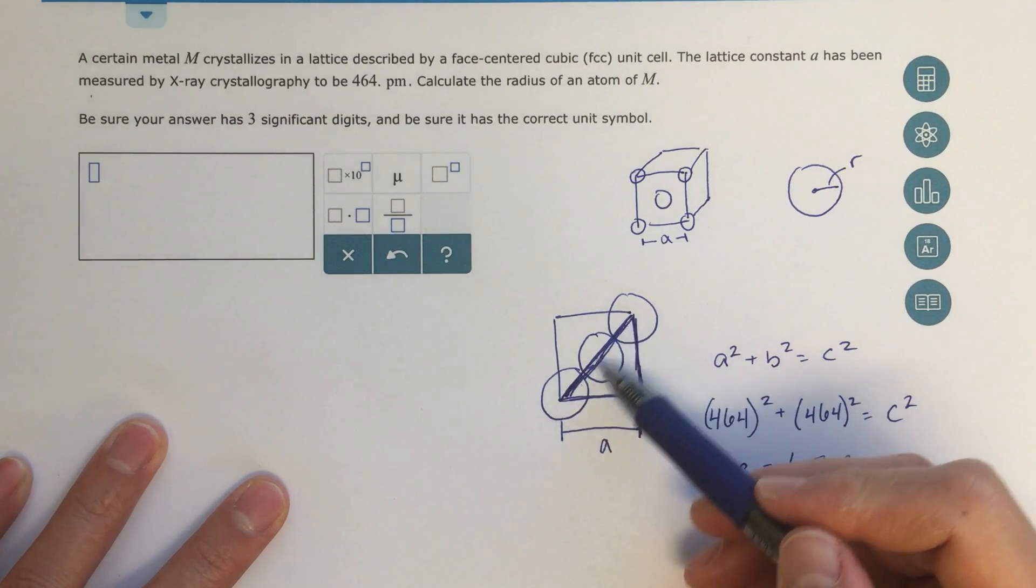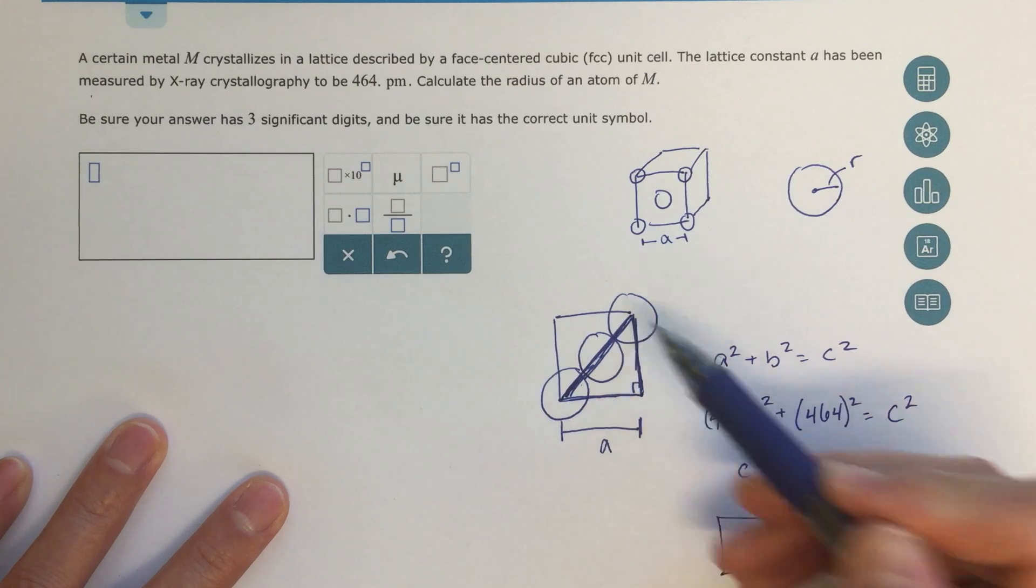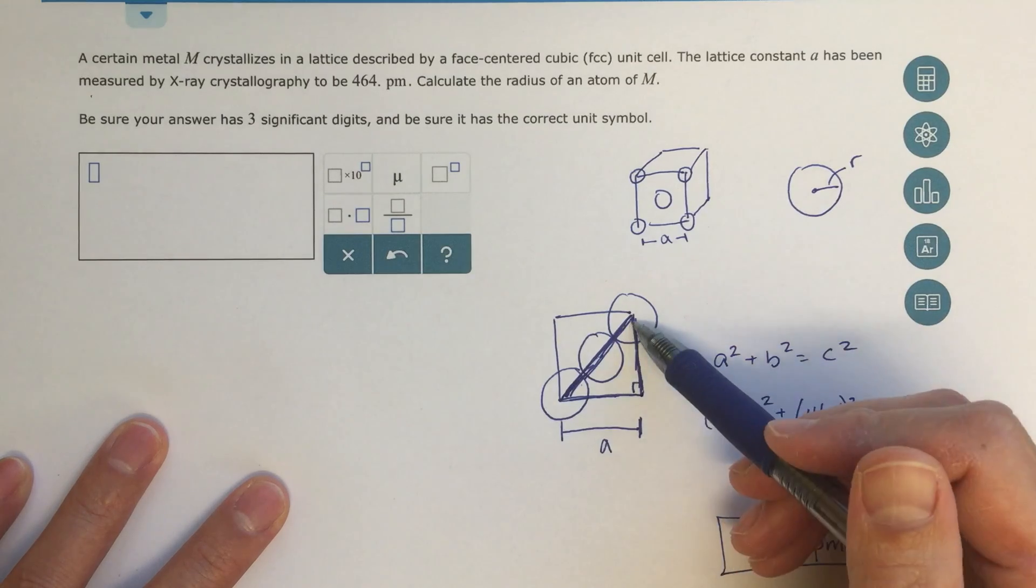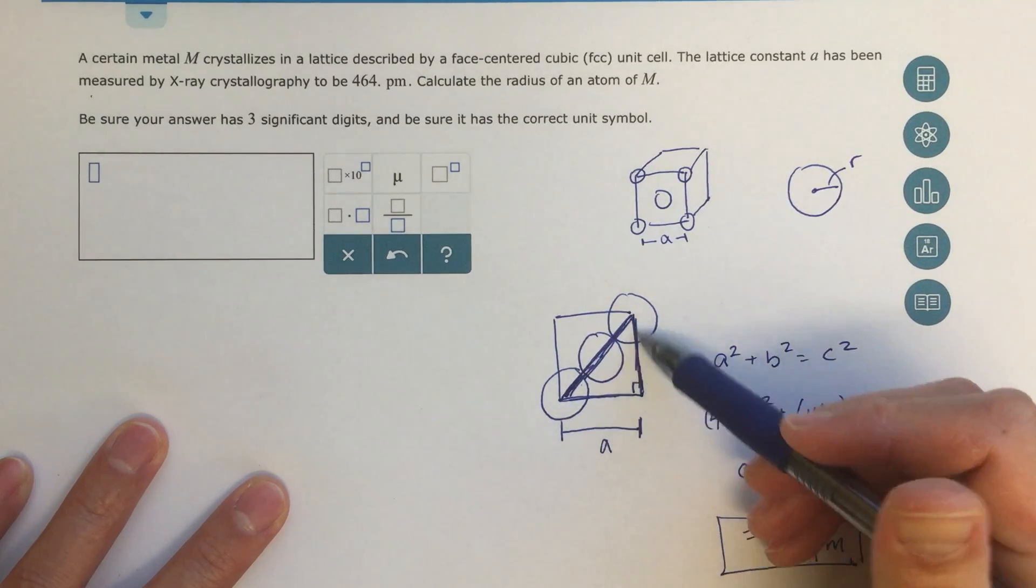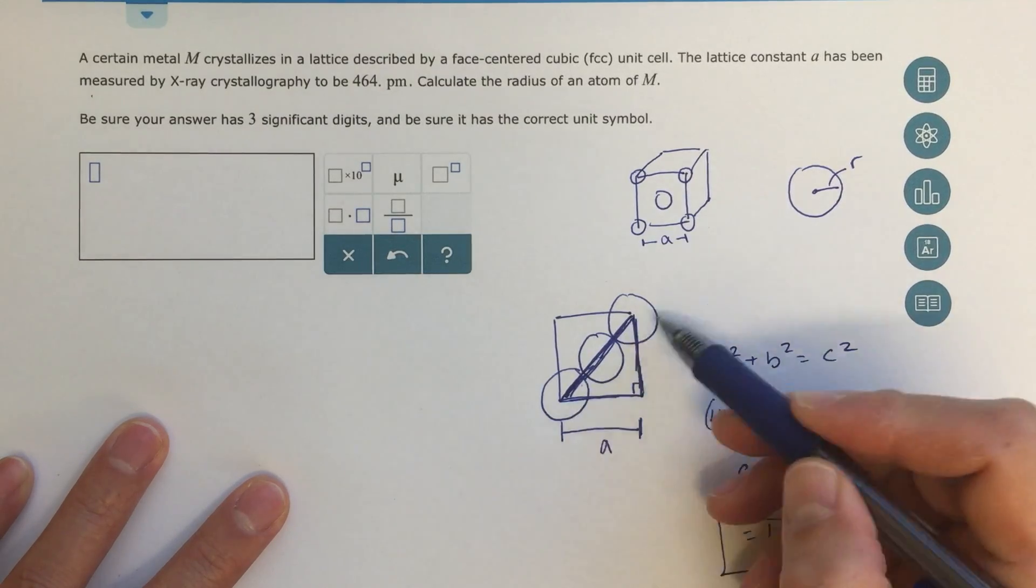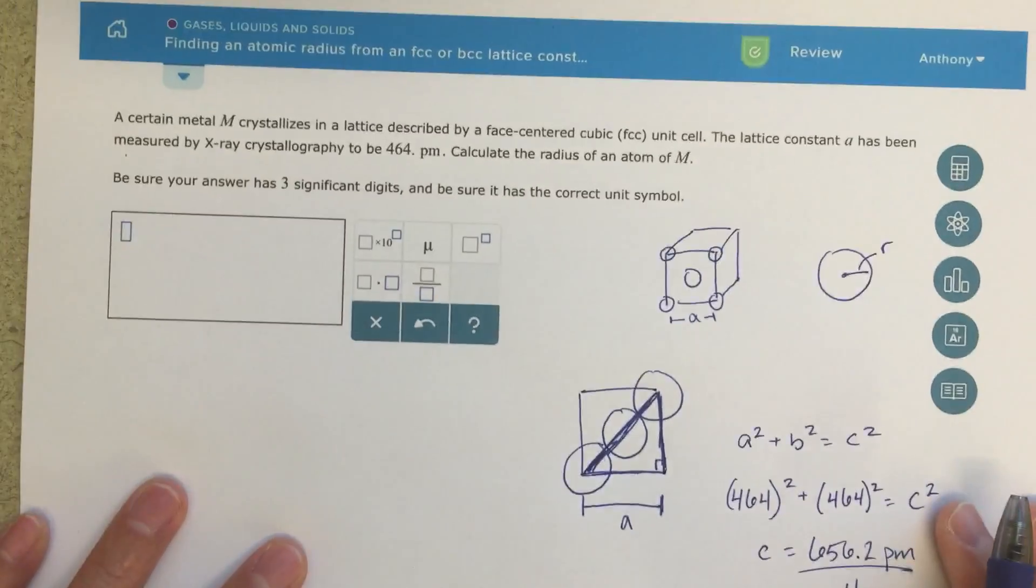The distance from here to here is a radius, 164 picometers. The whole distance, one, two, three, four equivalents, is 656.2 picometers. I figured that out because I drew this triangle, this right triangle, and solved for that hypotenuse, for that distance there. Alright, hope that helps!